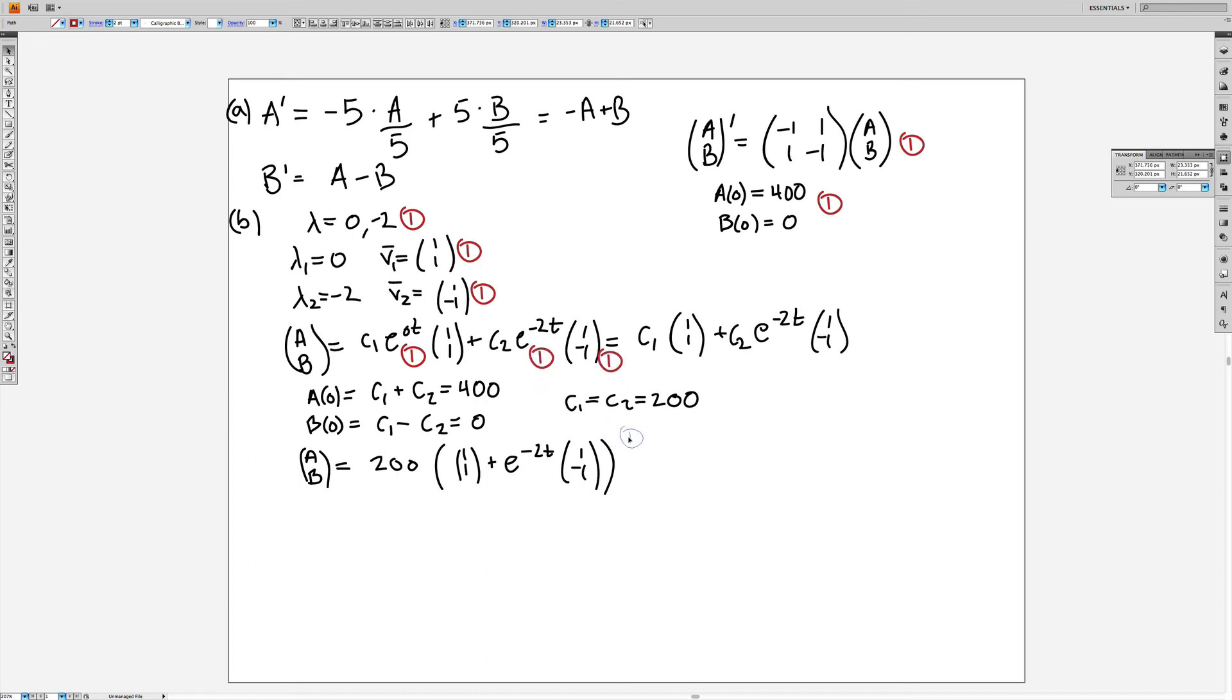So the next part, part c, you were asked how long does it take for the system to get within 1 over e squared of the steady state value. This should have said within 1 over e squared in a relative sense but I counted it correct whether you did it in an absolute or relative sense. And what this means is that if you look at either of the a(t) or b(t) equation the story is the same. This becomes 200(1 + e^(-2t)). So in a relative sense you want to get from 400 and you're getting closer to 200 as this decays away.